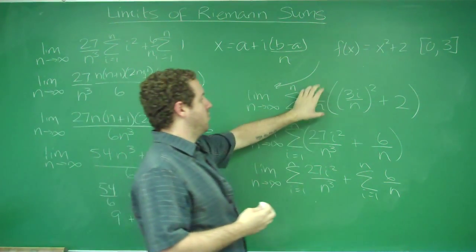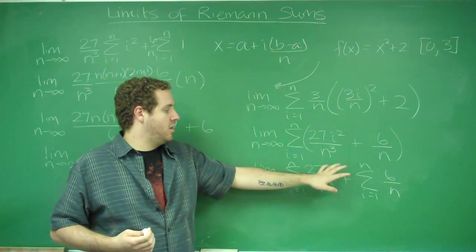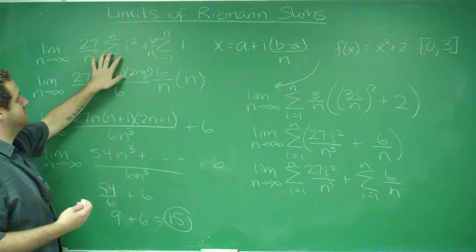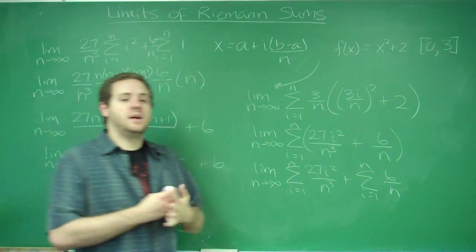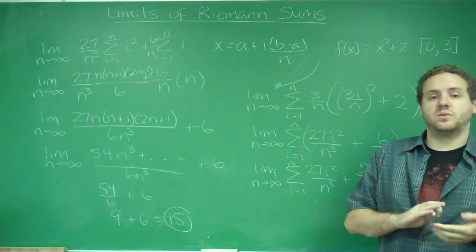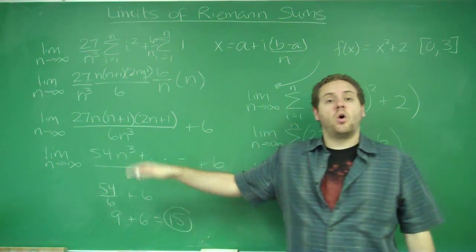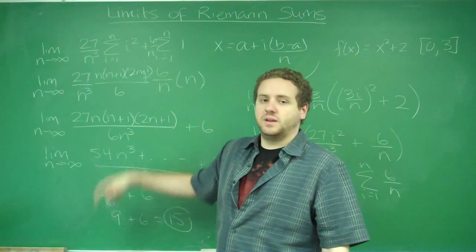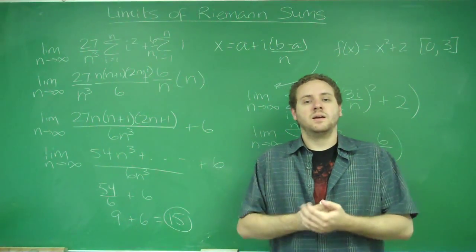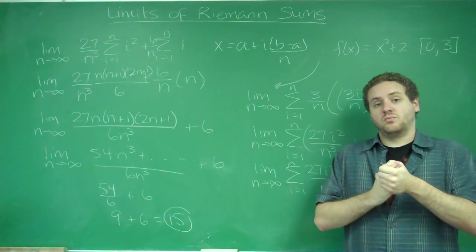Plug that into your function times b minus a over n, because that's your rectangle width and height. You always use the width b minus a over n times the function evaluated at that x. Multiply it all out, get it as simple as possible. Everything that doesn't have an i in it can come in front of your sums. When you're left with just the i's, use the substitutions provided for you: sum of i, sum of i squared, sum of i cubed. Finally, do the infinite limit — it should always work out that you have same-degree terms, so you use the ratio of coefficients to end up with a number.